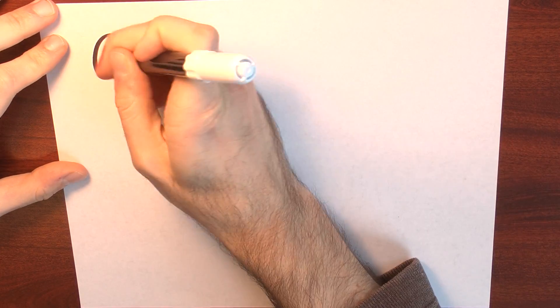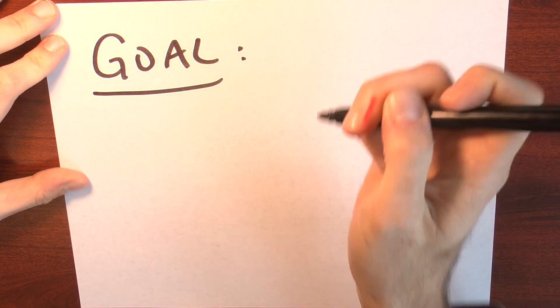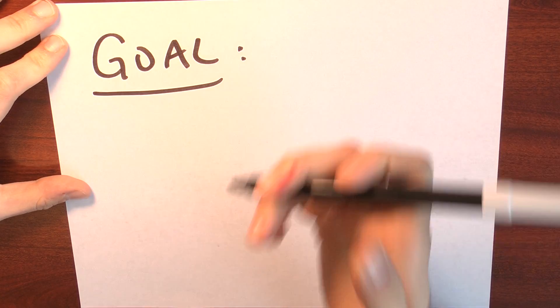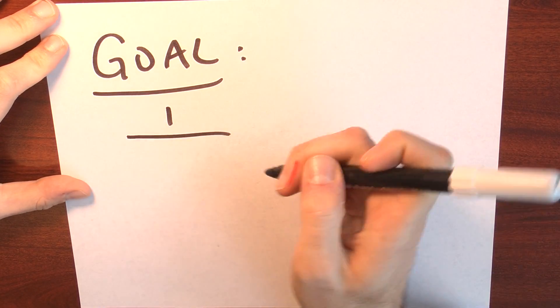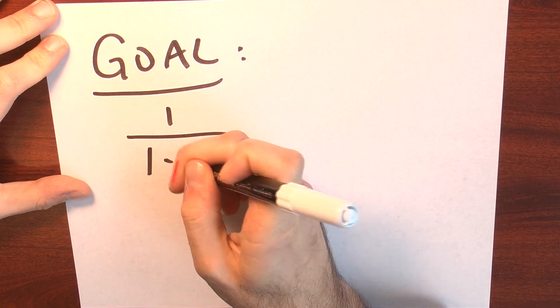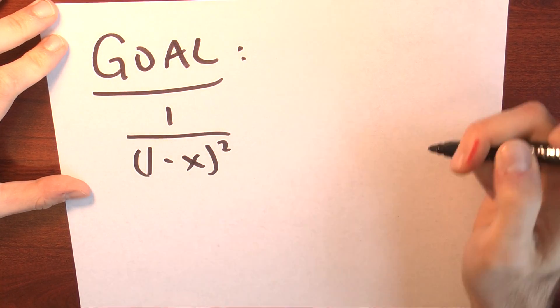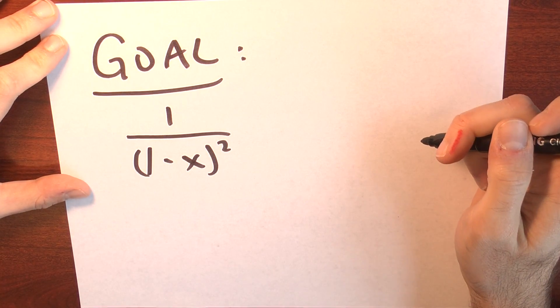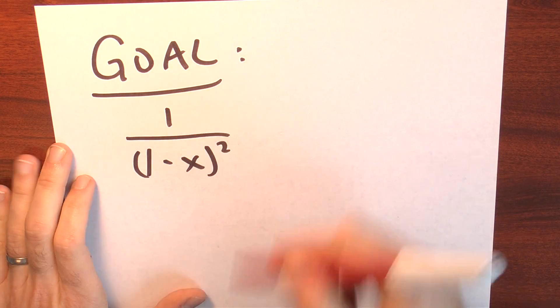Here's our goal: I'd like to find a power series for the function 1 over 1 minus x quantity squared. We can do this in two different ways. Let's notice something about this.